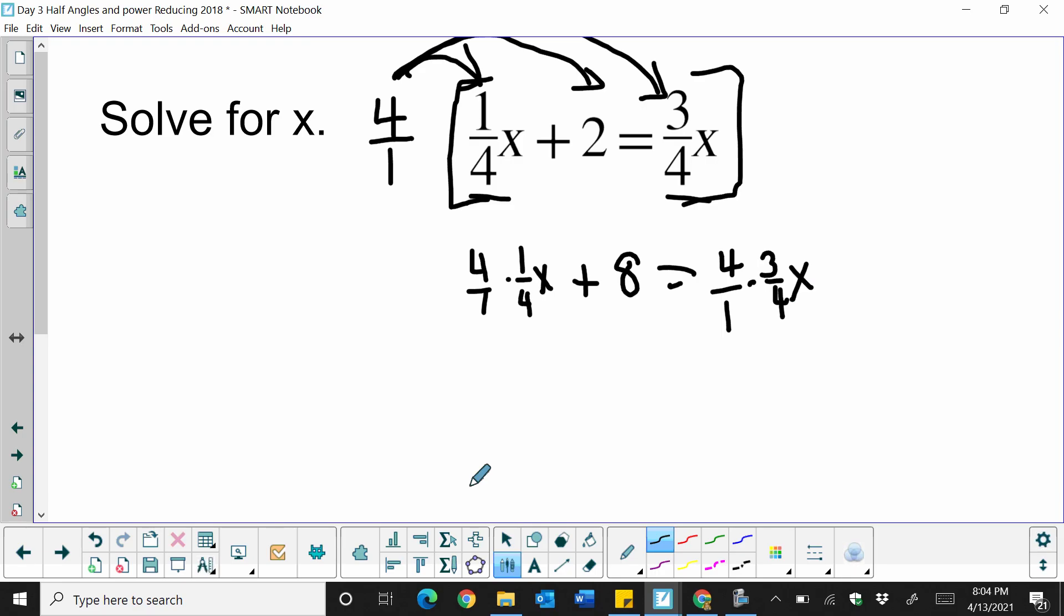And then we're going to simplify each term. So what happens? 4 over 1 times 1/4. The 4ths cancel, and I'm just left with 1 over 1, or just 1x. So what happens when you multiply through by this common denominator, you clear your fractions out, and it's just a nice, simple equation. So now let's collect our like terms.